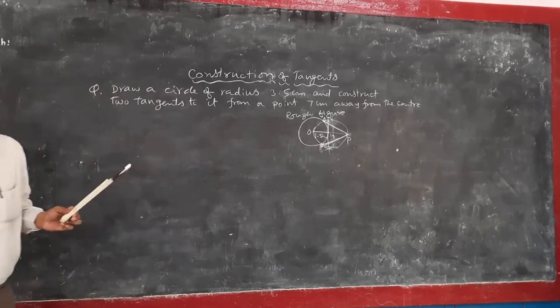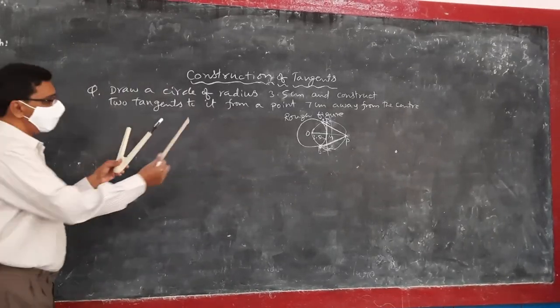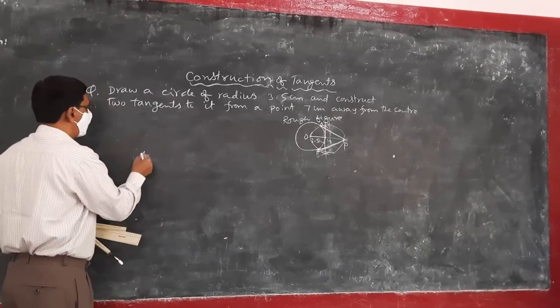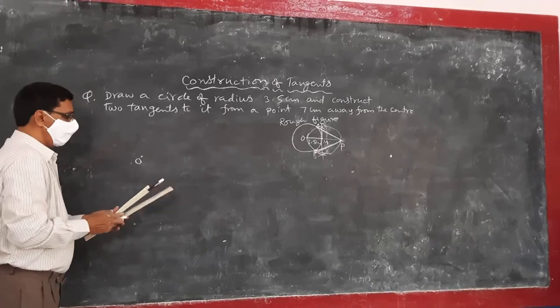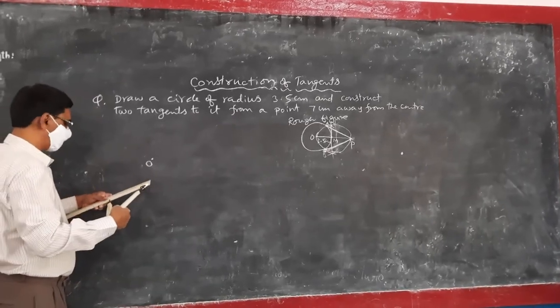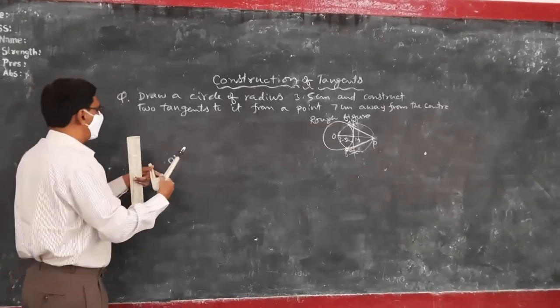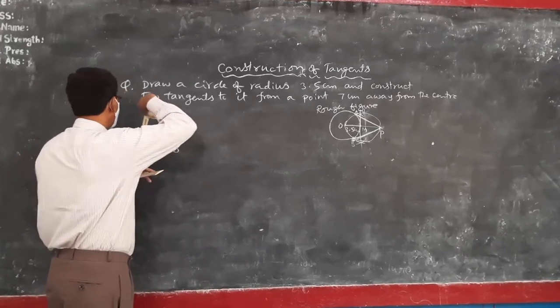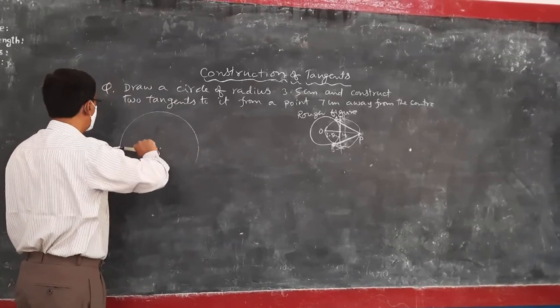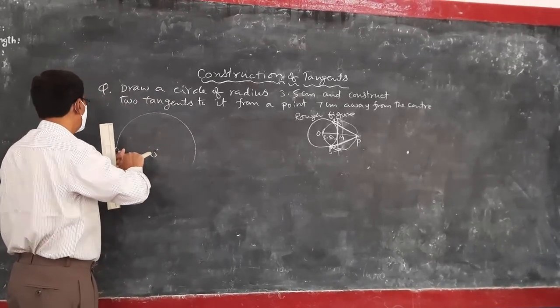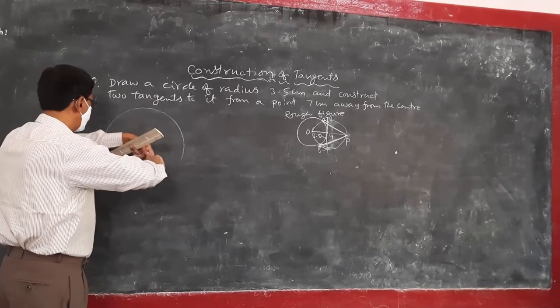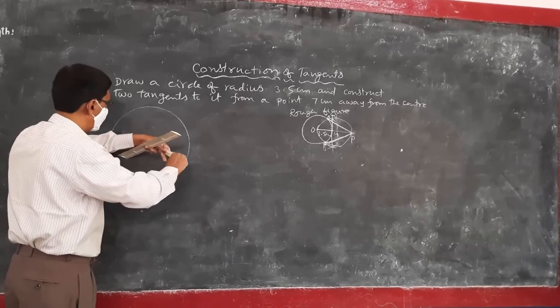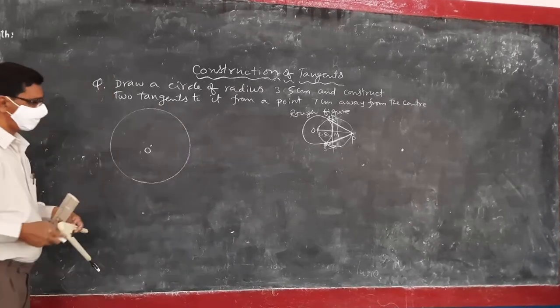Now let us see the construction. Take 3.5 cm measurement using the compass. Mark a point O first. With O as center, the circuit is constructed.